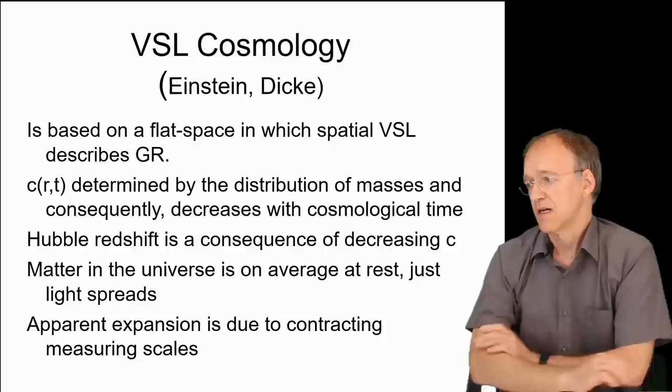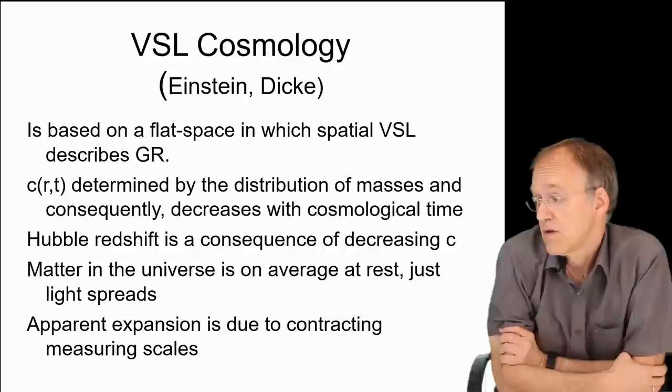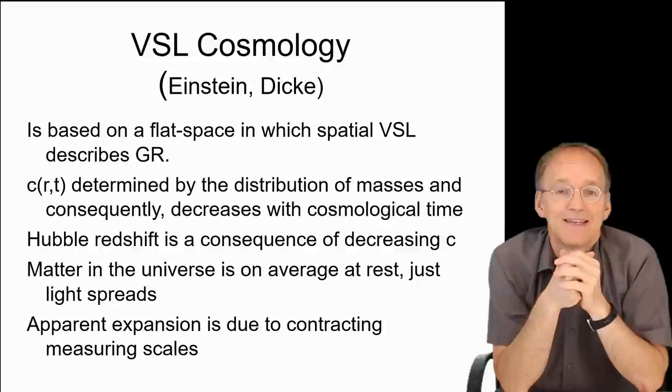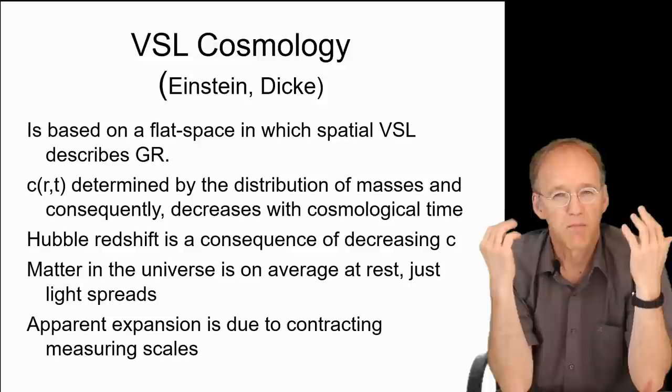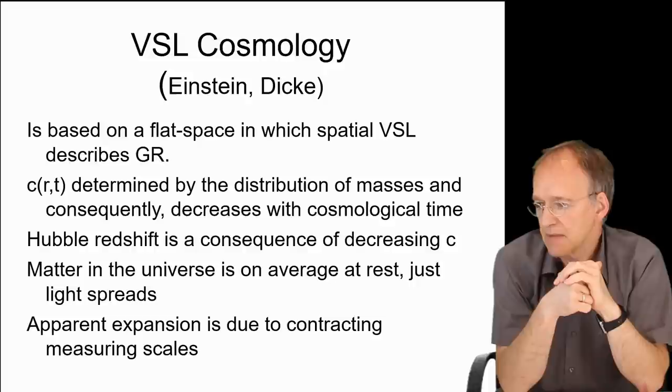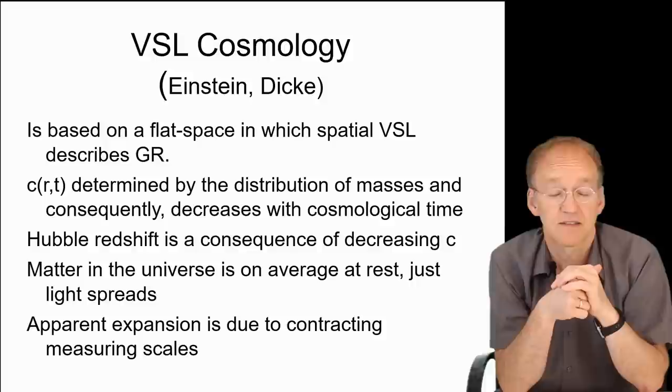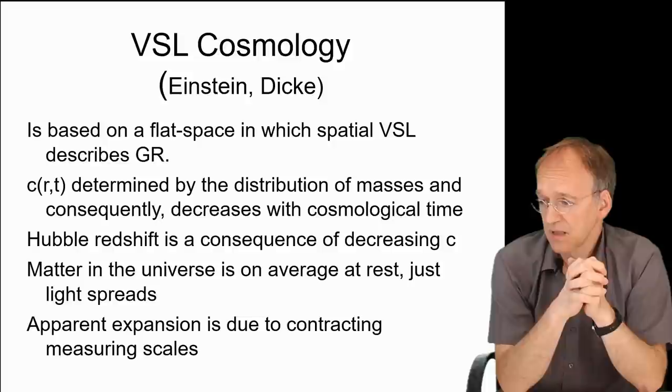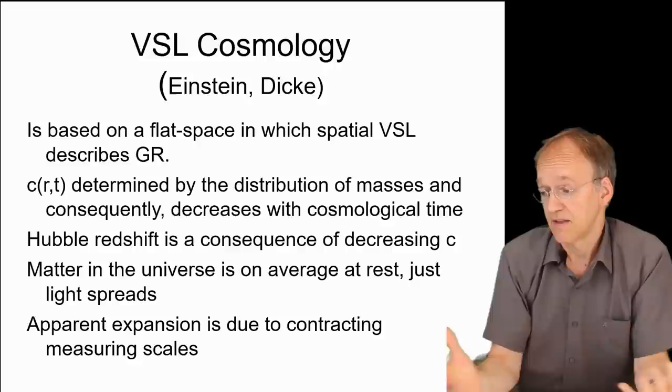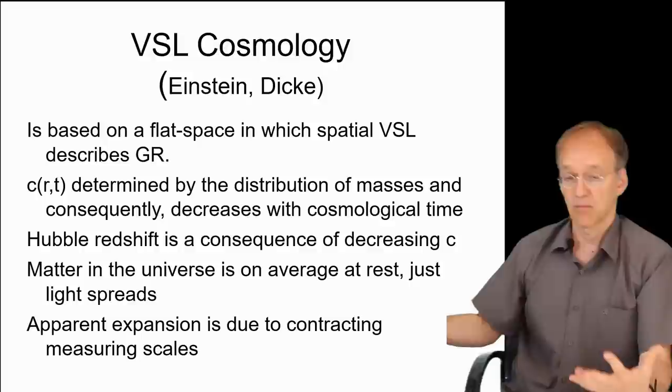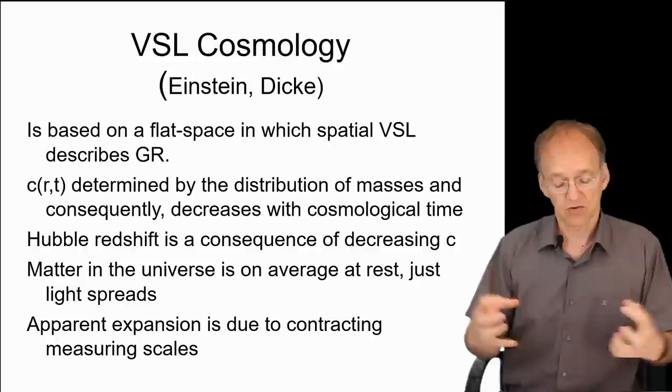Now, variable speed of light cosmology is based on a flat space with spatial variability and reproduces the general relativity tests. The interesting thing is that the distribution of masses in the universe, a very Machian idea, determines the speed of light. Then the Hubble redshift is just a consequence of decreasing c. It has very much explanatory power, I think. In this model, matter in the universe is just at rest on average, and light spreads—nothing else. The apparent expansion is due to contracting measuring scales. You might also speak of an illusion of expansion because it's your yardsticks that contract, not the matter is expanding.